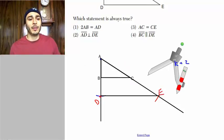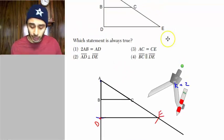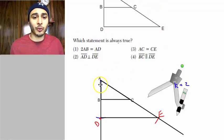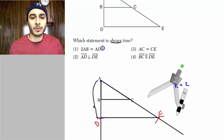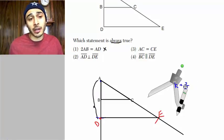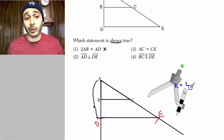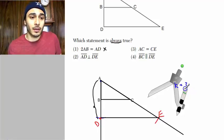Now, which statement is always true? The first statement says that 2AB equals 1AD. That's not always true. It's true here because I said K equals 2, but what if K was equal to 3, right? Then it would be 3AB equals AD. You see what I mean? So that's not always true.